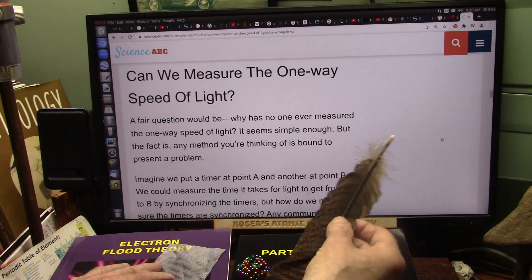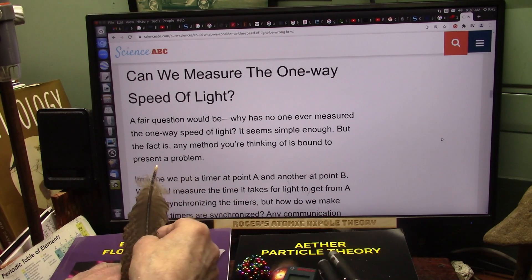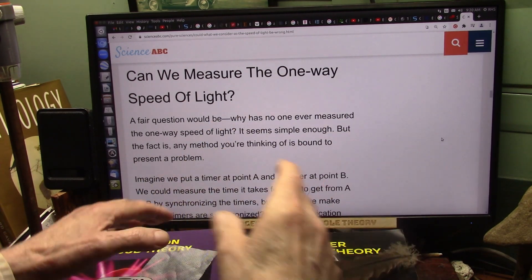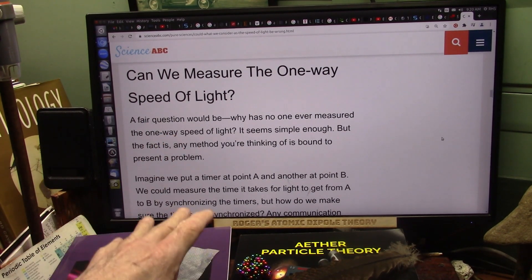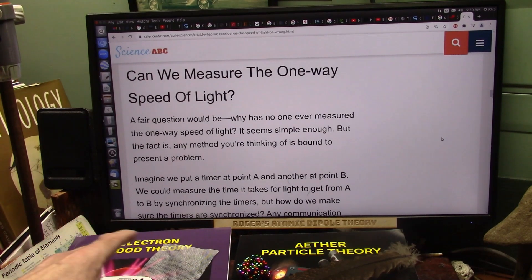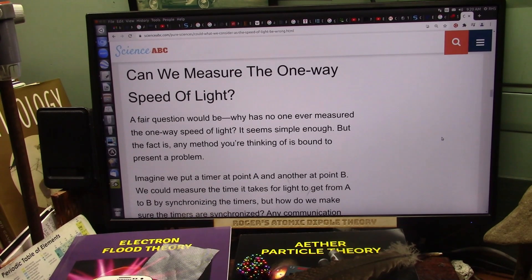Look at this. This is Science ABC. They're saying, can we measure the speed of light, the one-way speed of light? A fair question would be, why has no one ever measured the one-way speed of light? Well, they have done it, and they just disregard it. It seems simple enough, and it is. But the fact is, any method you're thinking of is bound to present a problem.